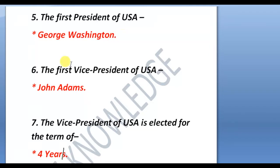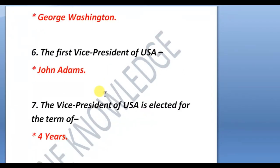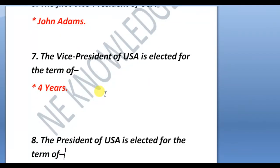Next question: who was the first Vice President of the USA? The first Vice President was John Adams. The next question is: the Vice President of the USA is elected for a term of four years.